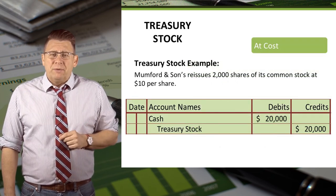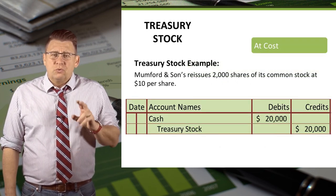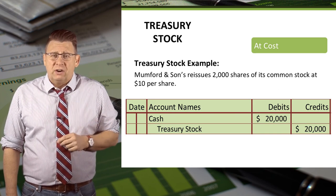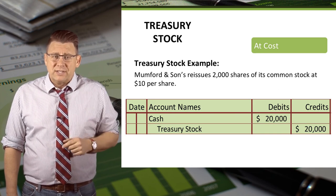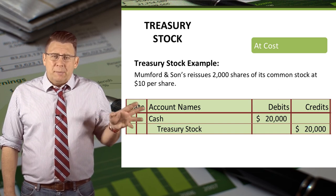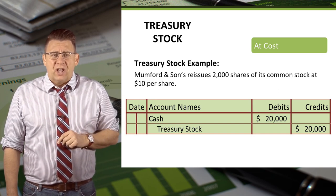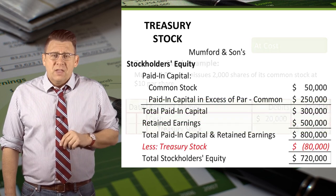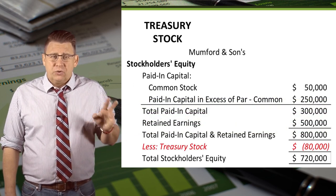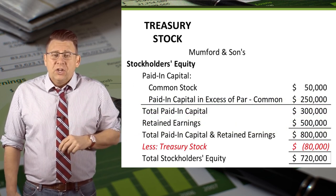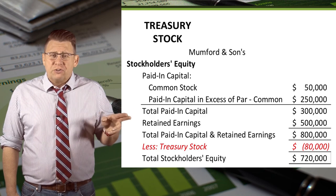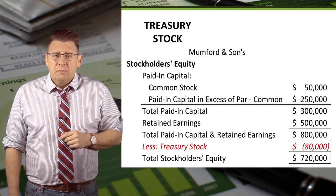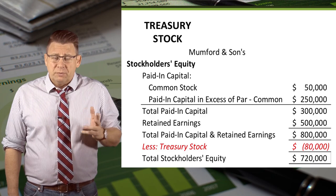In this example, Mumford & Sons reissues 2,000 shares of its Treasury stock at $10 per share, its cost. So we would debit cash and credit Treasury stock for $20,000. The stockholders' equity section after the reissuance shows that Treasury stock is now $20,000 less and equity has increased by $20,000 because of it.